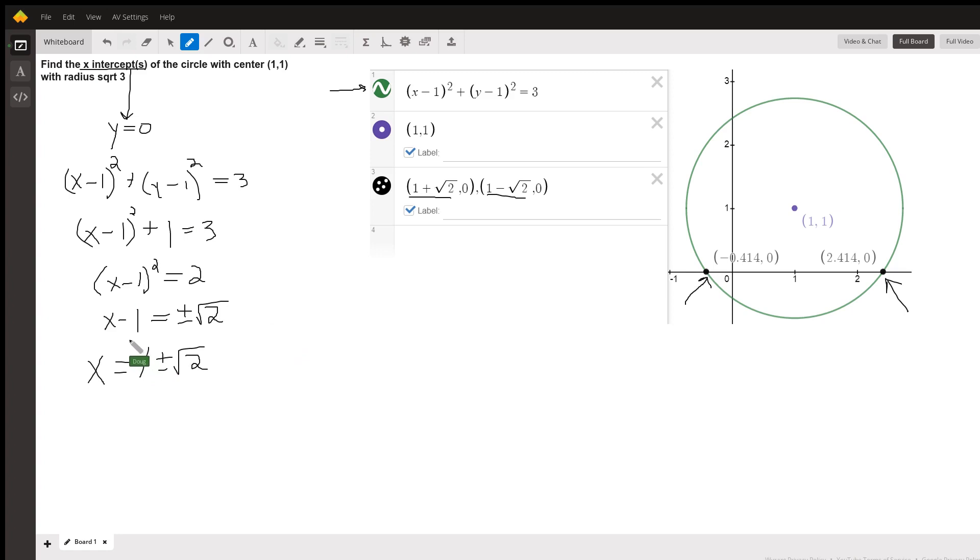You could put this value in for x, 0 in for y, because the x-intercepts are (1 plus the square root of 2, 0) and (1 minus the square root of 2, 0). So if you plug these values in for x and y in the original equation, you would see that you would get a value of 3. I'm not going to do that here, but hopefully that gave you some idea how to tackle similar problems.